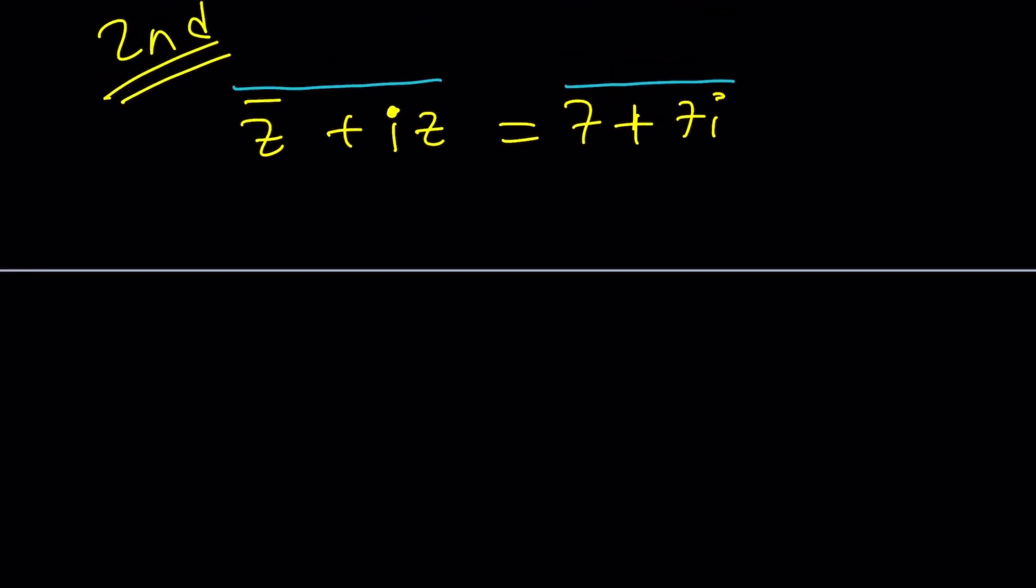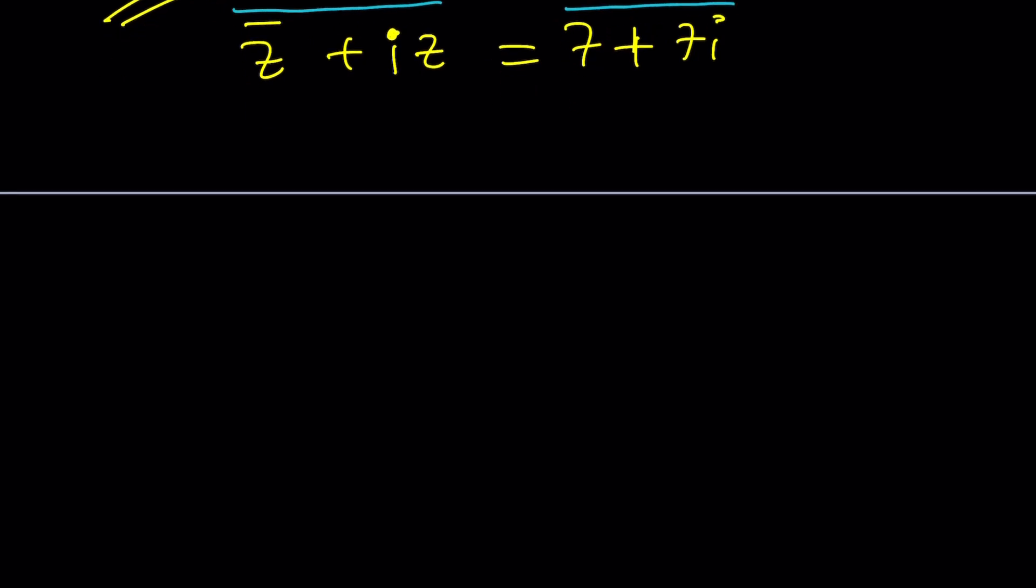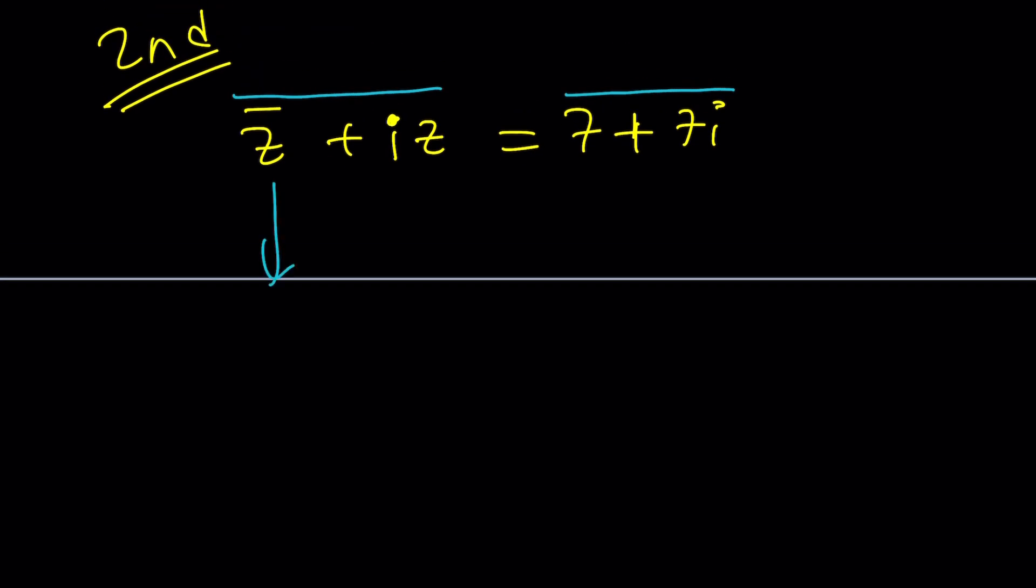So, let's go ahead and use the properties to come up with another equation. When I conjugate the left-hand side, I have a sum, so it's going to be the Z bar bar. If you double bar Z, you're going to get Z. It's kind of like reciprocal. Turn something upside down and turn it upside down again. Hopefully, by that time it's working, you're going to get Z. So, this is going to be Z plus, we have a product in the second term. We kind of need to think about the conjugate of both. What's the conjugate of I? Negative I. Got to be careful about that. And this is going to be Z bar. And the right-hand side is just going to be 7 minus 7i.